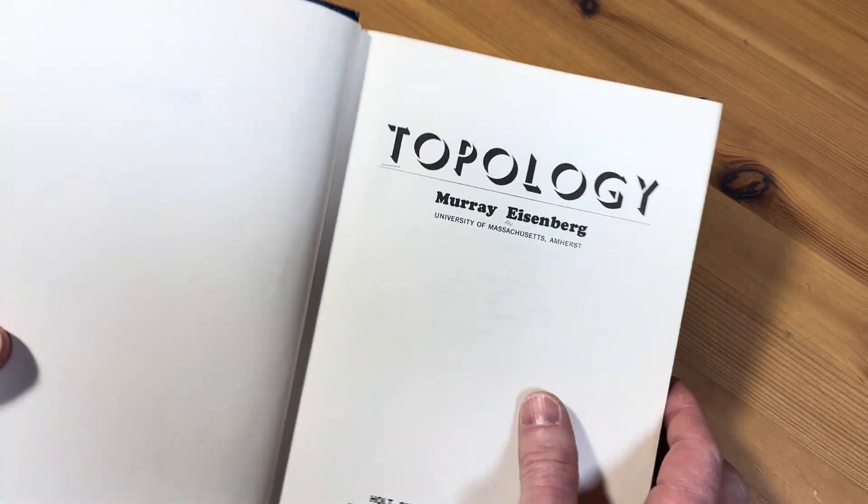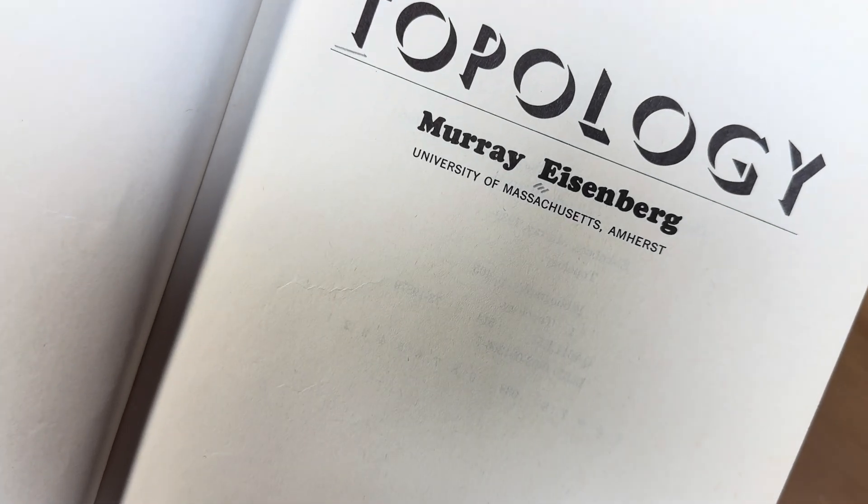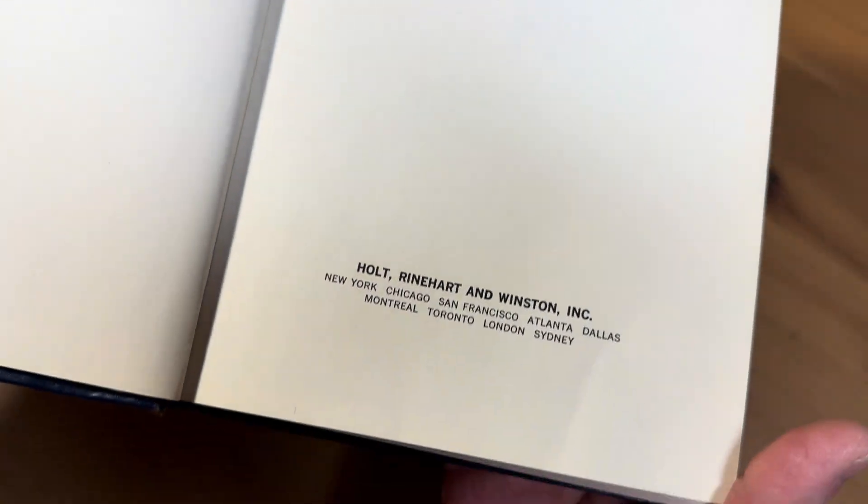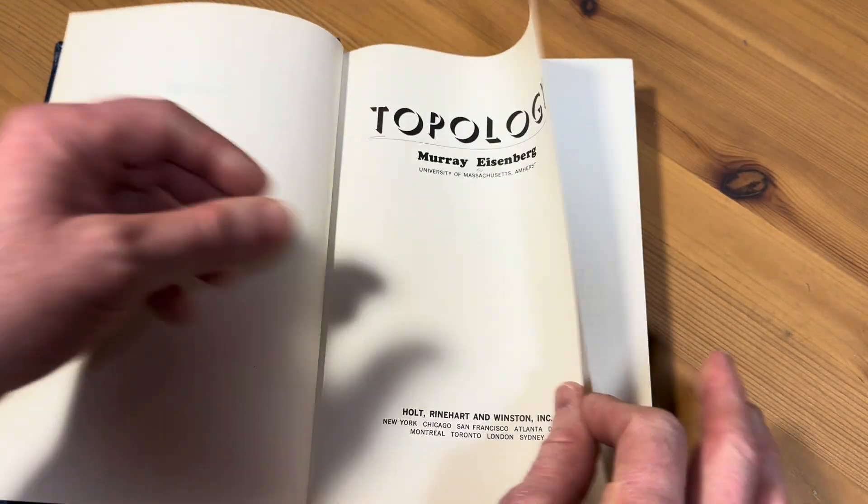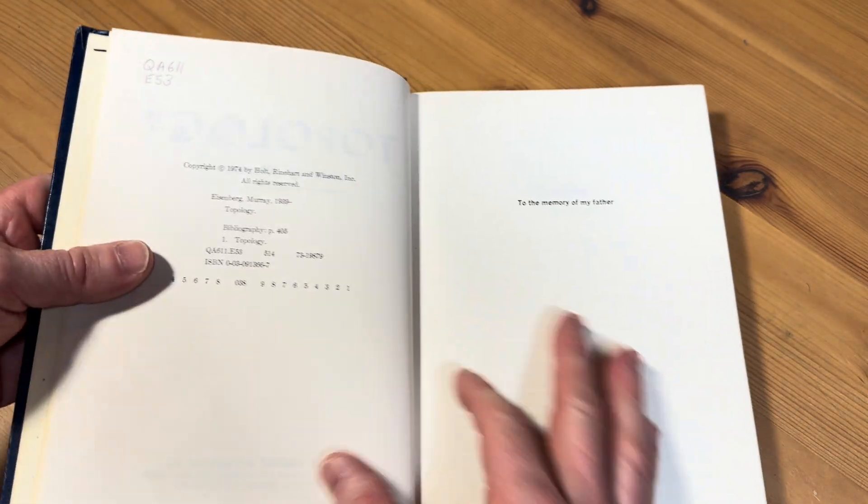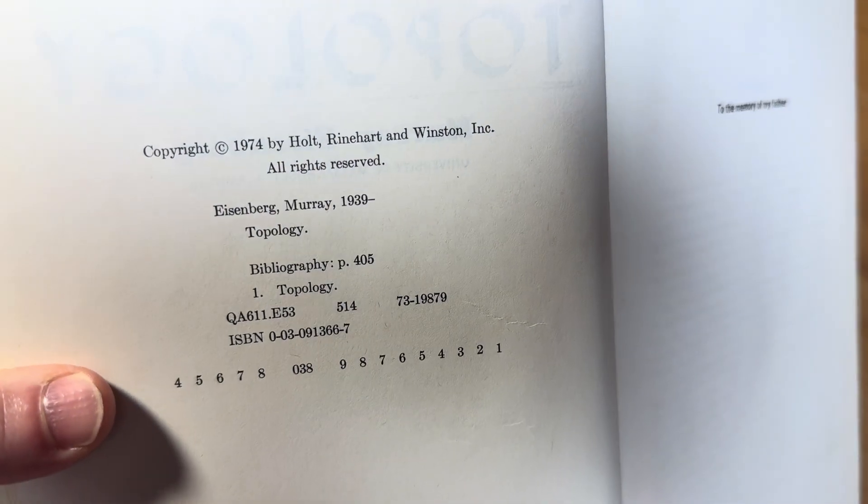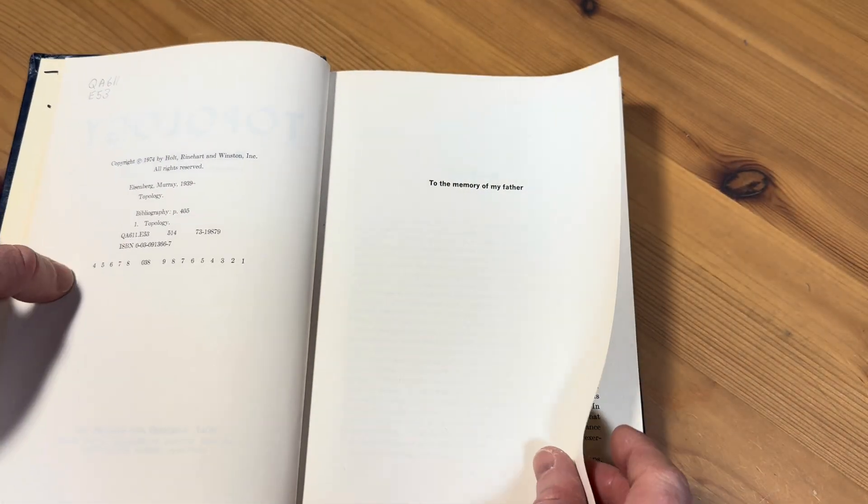Topology. Murray Eisenberg, University of Massachusetts Amherst. Cool. Let's take a look here. Oh, here's the copyright. Looks like this is the first edition. 1974. Pretty sure this book is fairly rare. I will try to leave a link in the description.